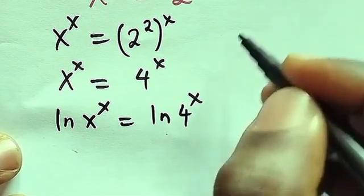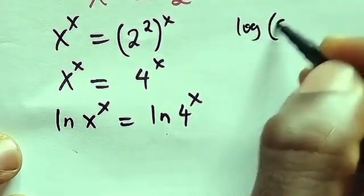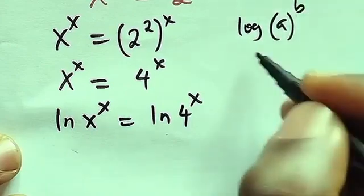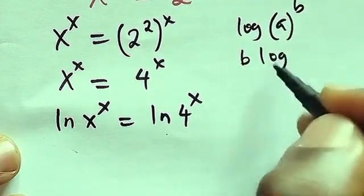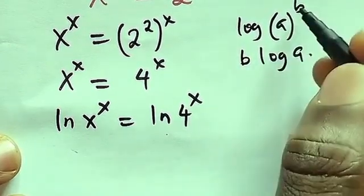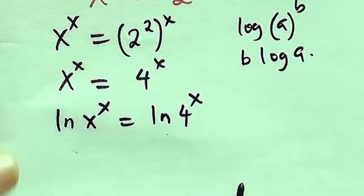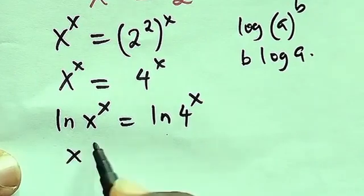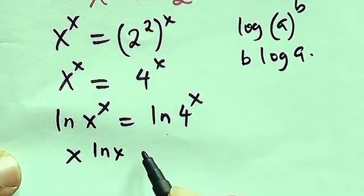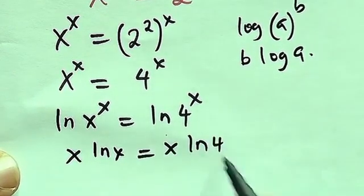So now according to the law of the logarithm, whenever you have log A to the power B, this will return to the constant coefficient of the logarithm. So we're going to be having x ln x then equals to x ln 4.